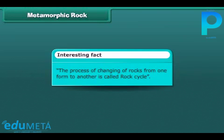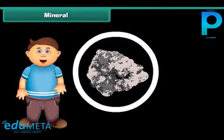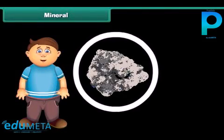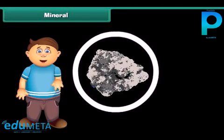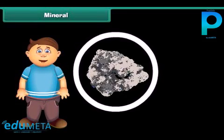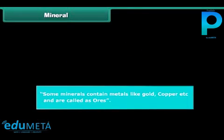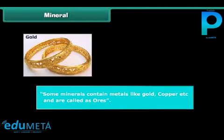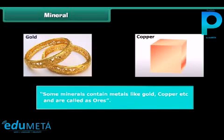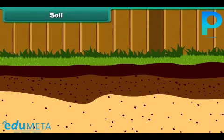The process of changing of rocks from one form to another is called the rock cycle. Now let's shift to minerals. Minerals are the materials from which rocks are formed. Minerals contain several important substances. Some minerals contain metals like gold and copper and are called ores. We get metals from these ores.